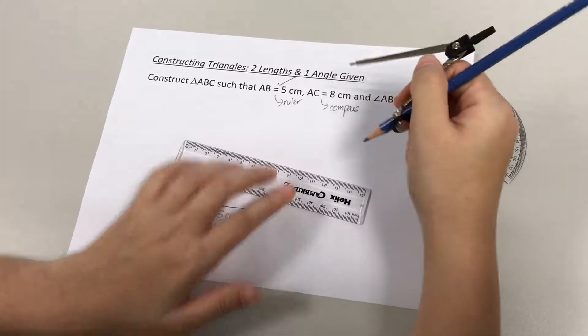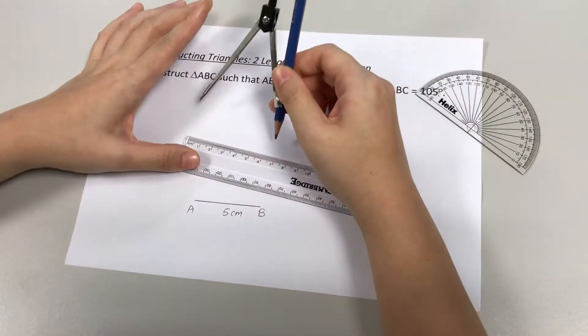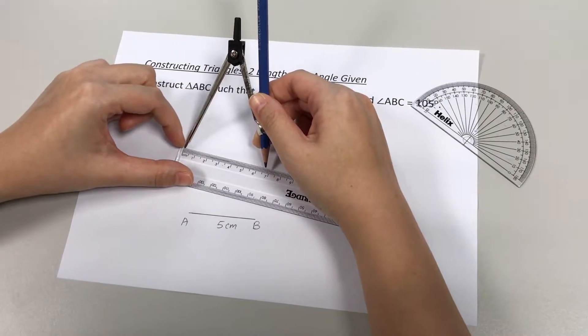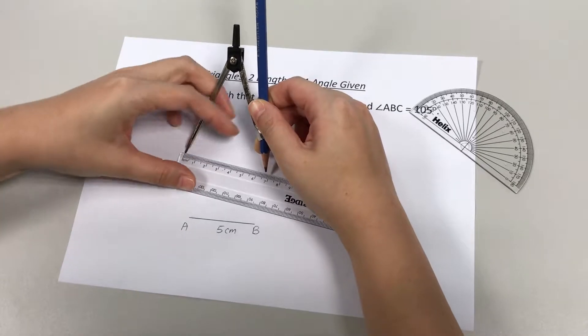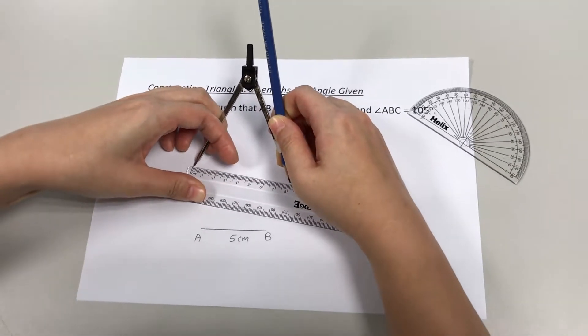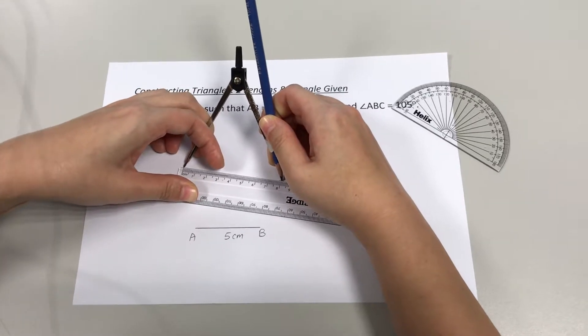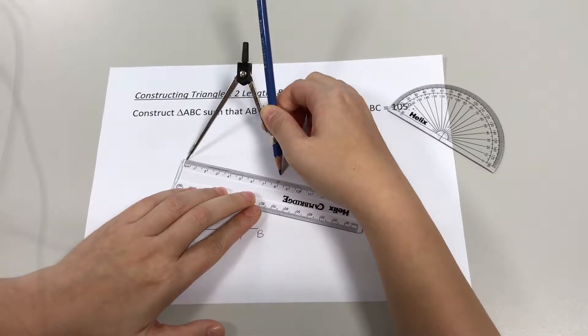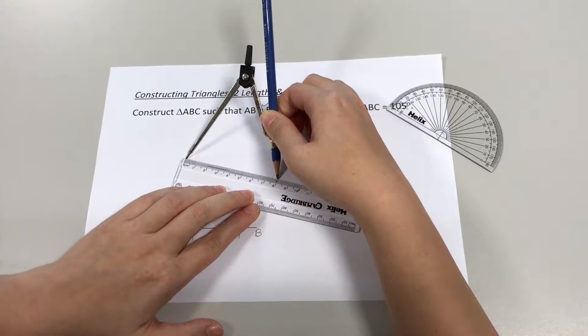I'm going to get my compass ready by opening it to 8cm. Make sure the needle is placed at 0, not at 1. I'm going to extend it all the way to 8cm. That's 8cm.